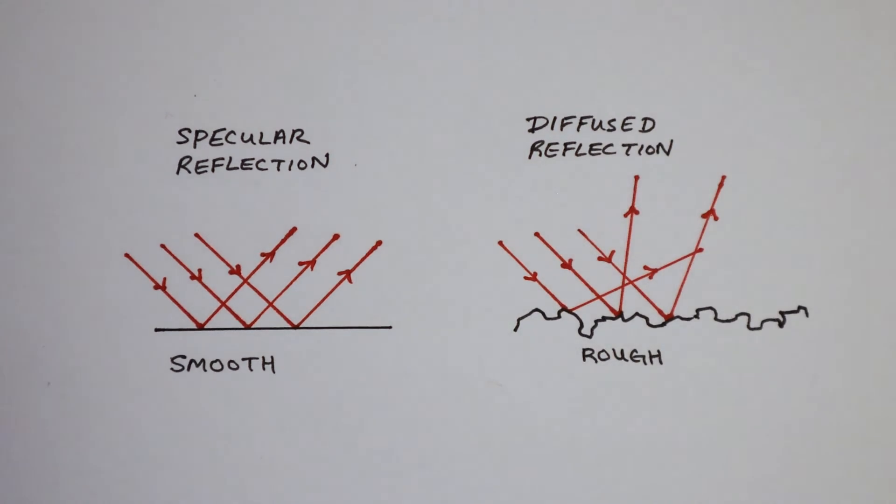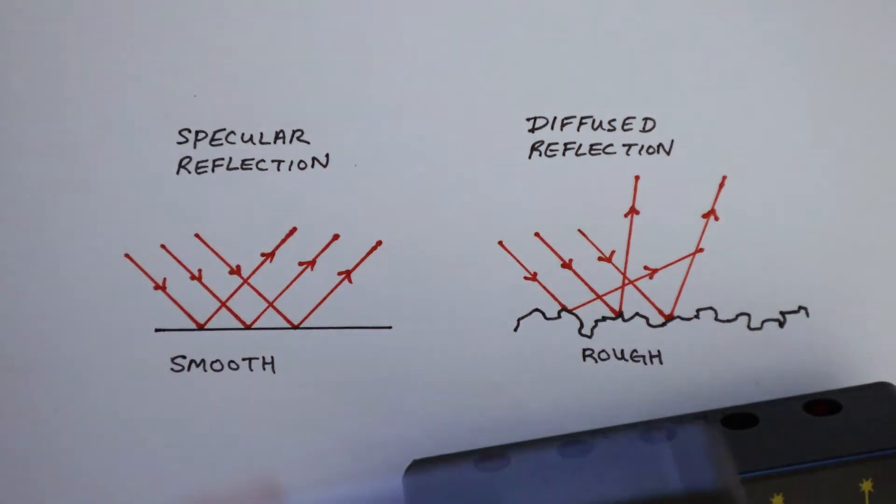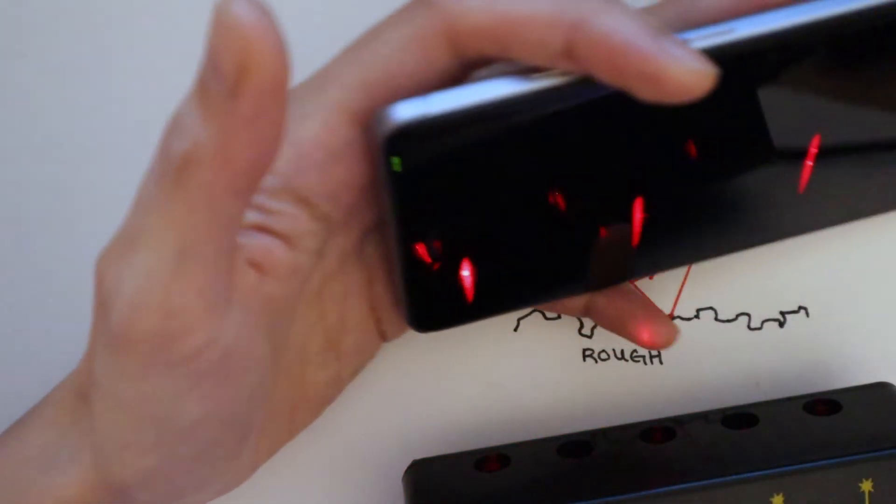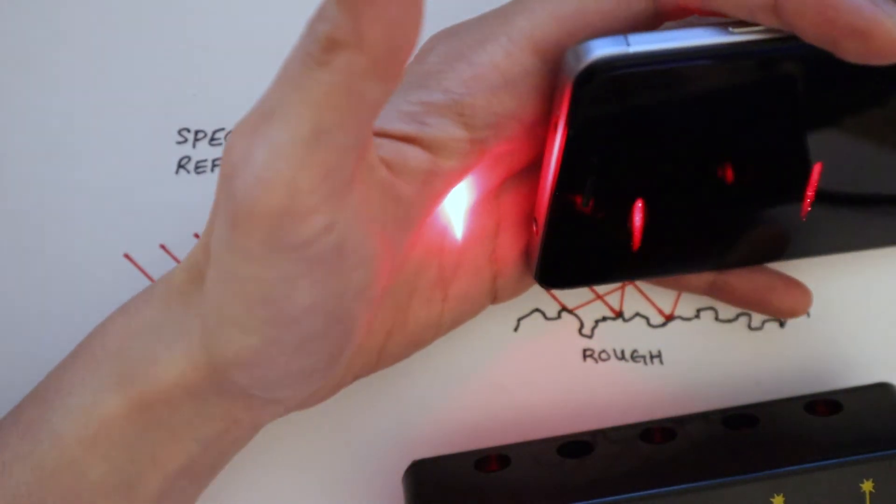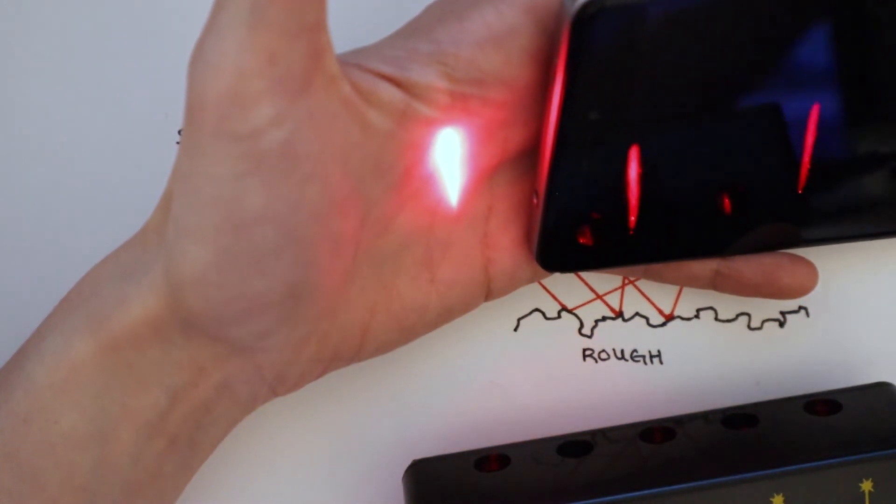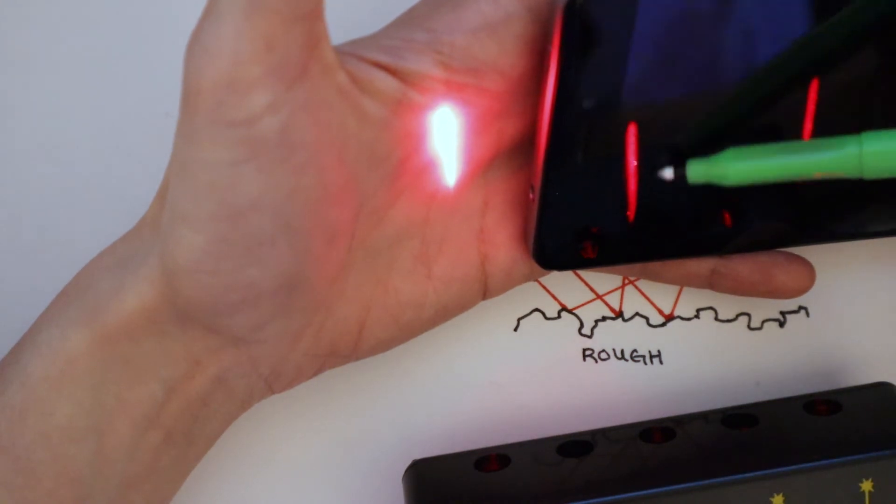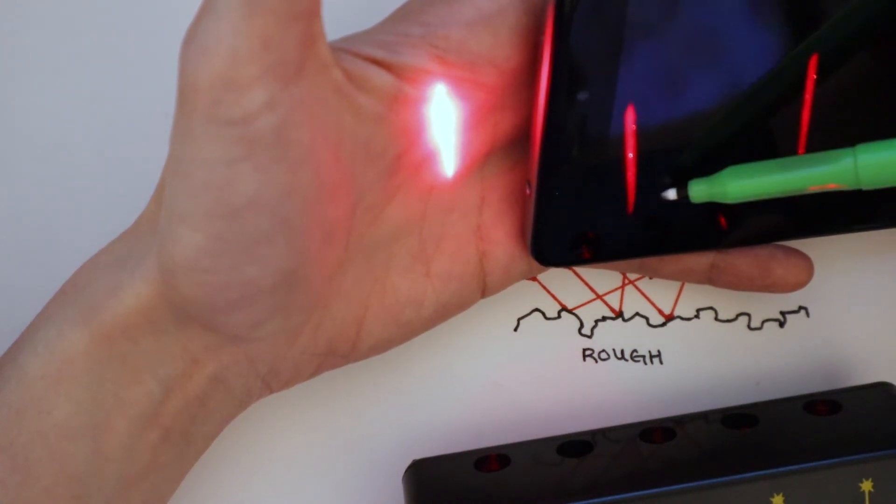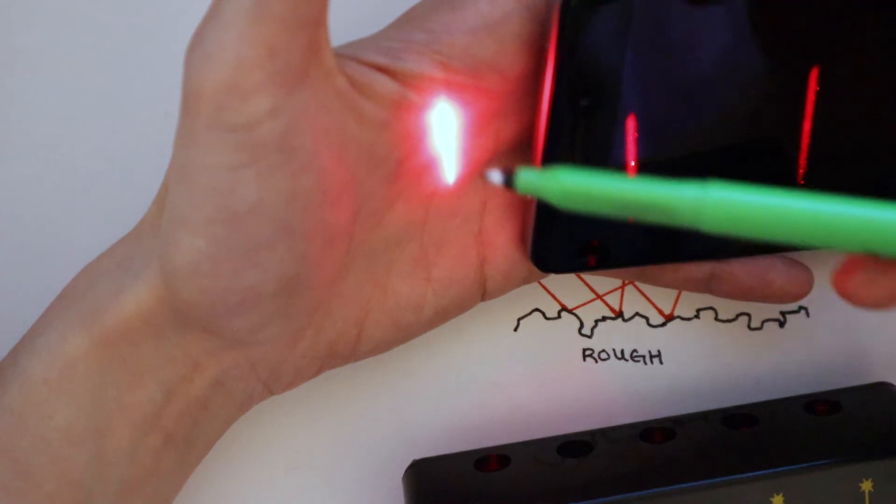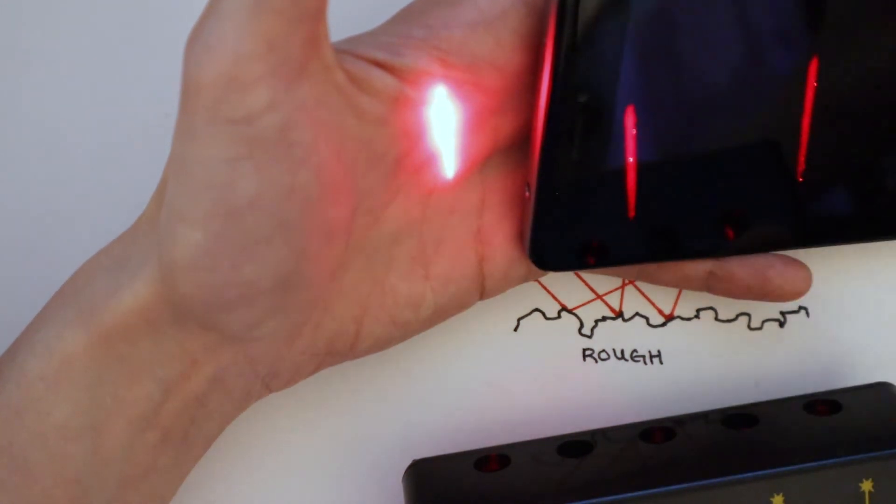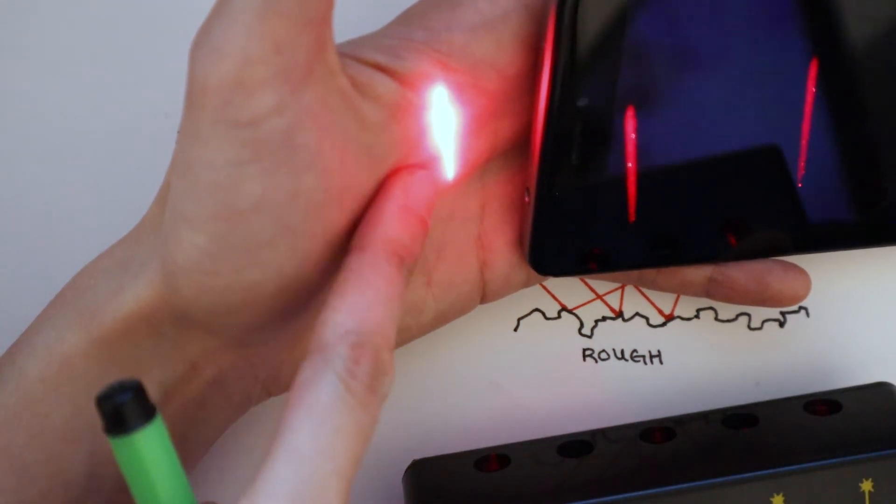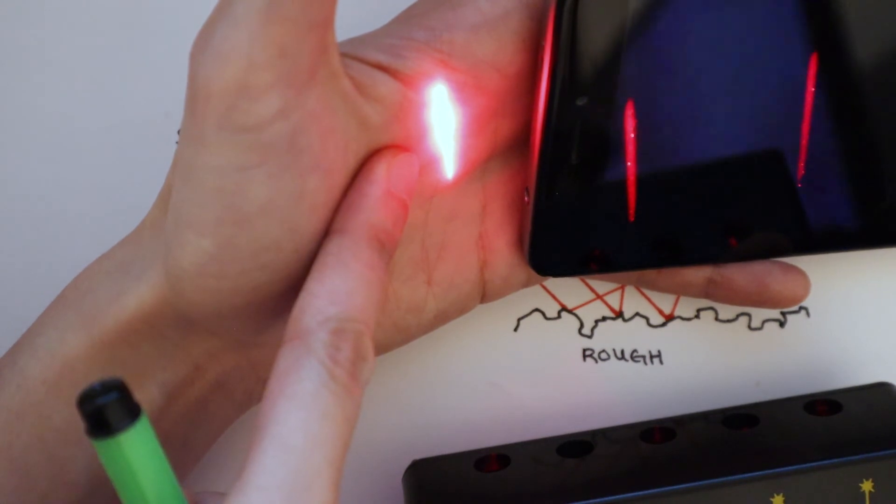We can make a comparison using my hand and my phone. Which one shows a specular reflection and which one shows a diffused reflection? You can see that the light is much more intense. It stays narrow when it is reflected from my phone. But on my hand, you can see that the reflected light is going in different directions, making it much more diffused.